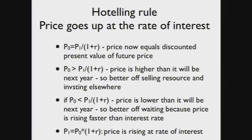The Hotelling Rule tells us about exhaustible resources. The punchline is that the price goes up at the rate of interest. The price at time zero equals the discounted price at a future time. If the price now is greater than the discounted future price, we should sell and invest the money elsewhere at the interest rate. Our money will grow faster if we just sell the resource and invest it. If our price at time zero is less than the discounted future price, we should wait because it's going to be worth more in the future.